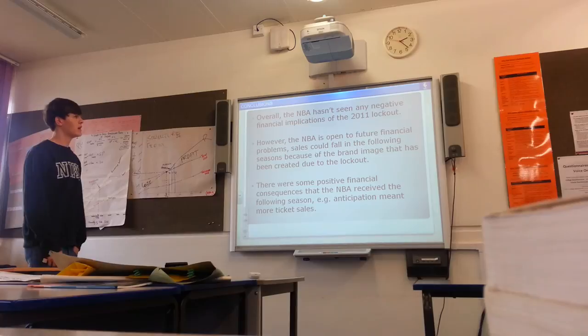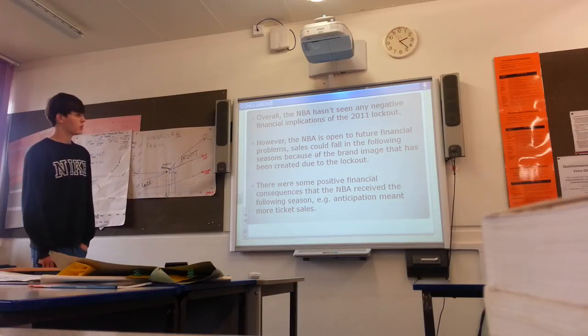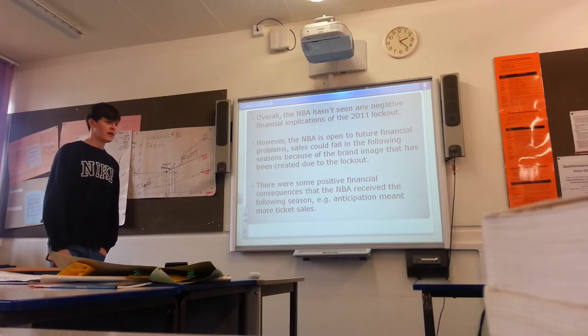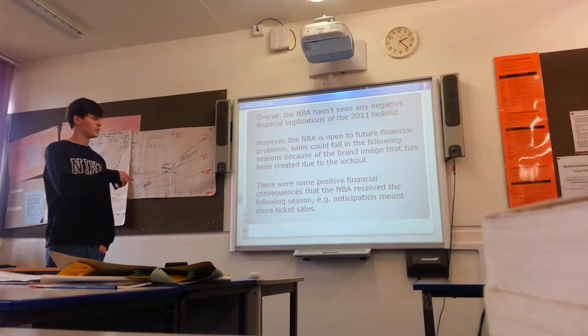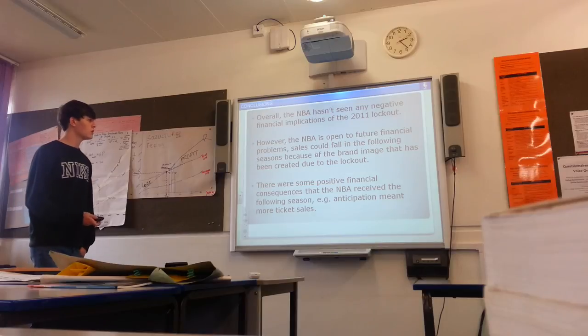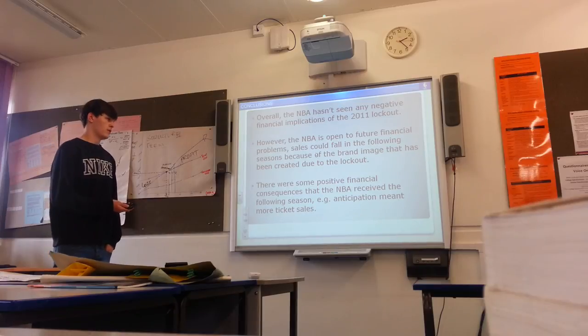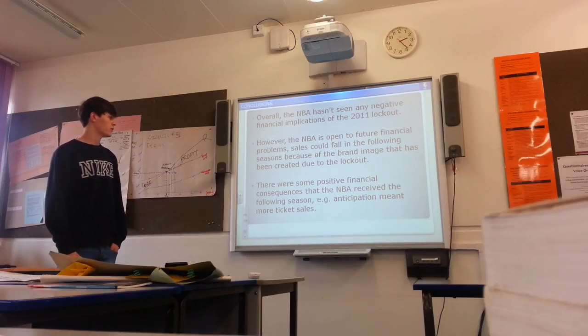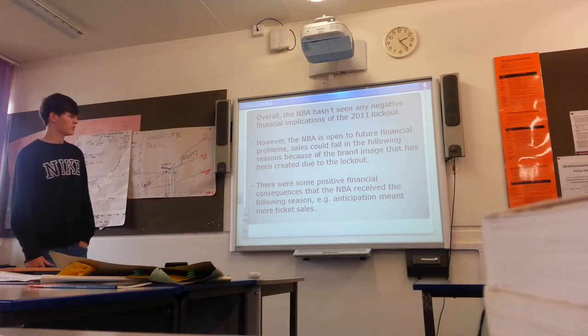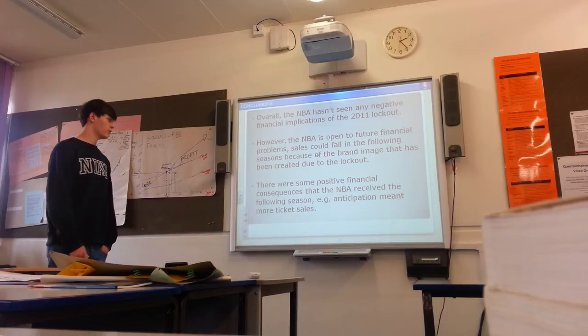Overall conclusions. The NBA hasn't seen that many negative implications of the 2011 lockout. However, the NBA is open to future financial problems. For example, if shooting accuracy does continue to decline, because it has dropped even further since the stage has dropped. It dropped 1% each of the following seasons, so it is still declining. So, if it were to continue declining, they could see a drop in sales. And also, it's not going to help the brand image because of the lockout. So, if they don't like the way the players or the owners are acting, they could go and watch other leagues, such as the Chinese League or the Turkish League. But there were some positive financial consequences. For example, the anticipation meant more ticket sales were sold.